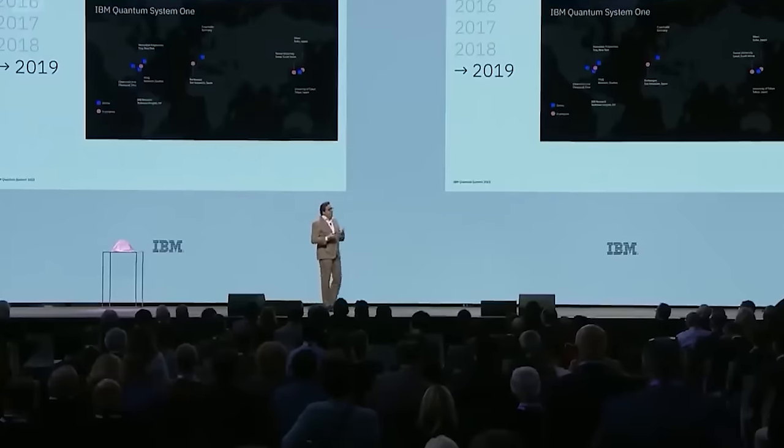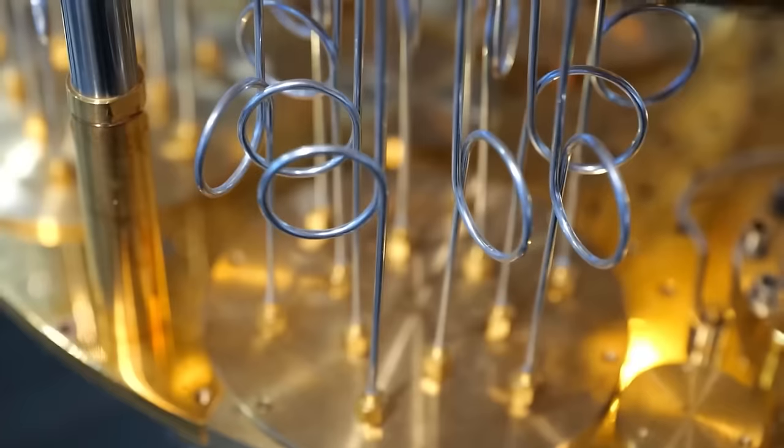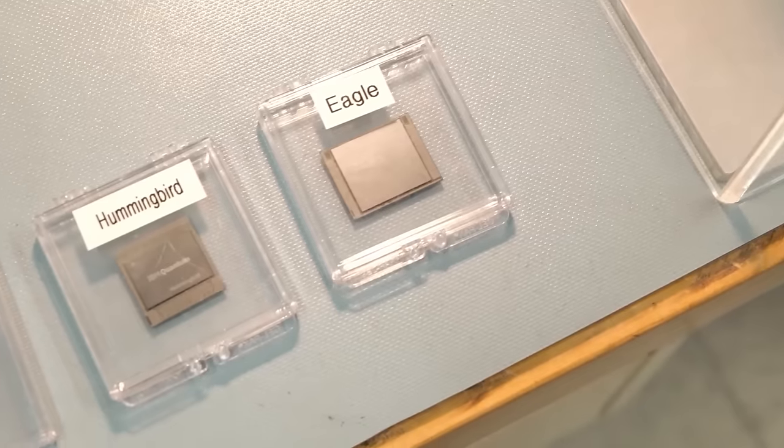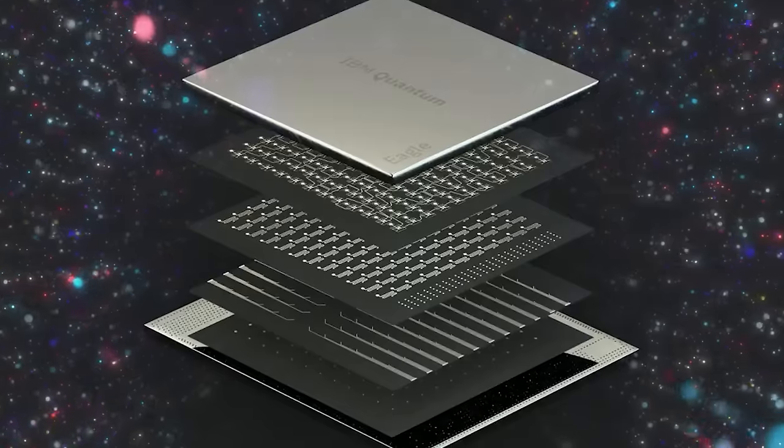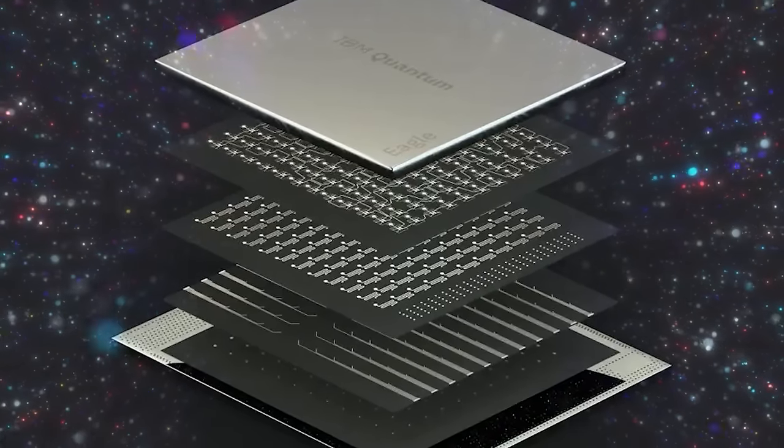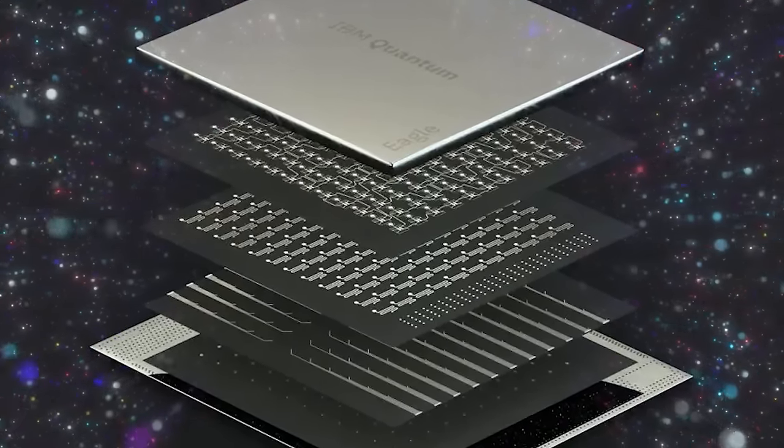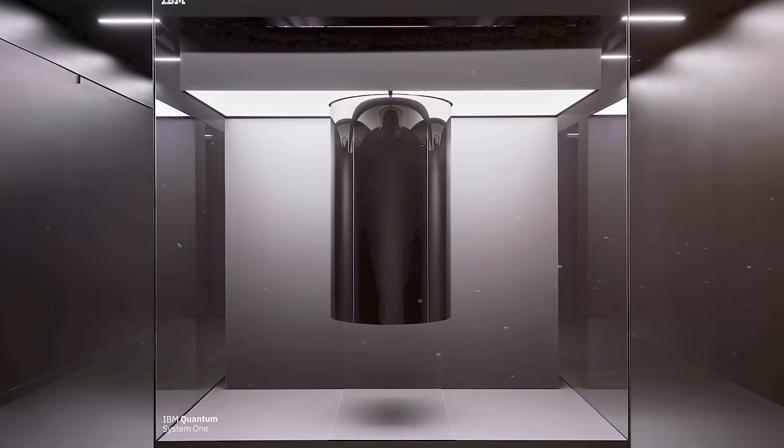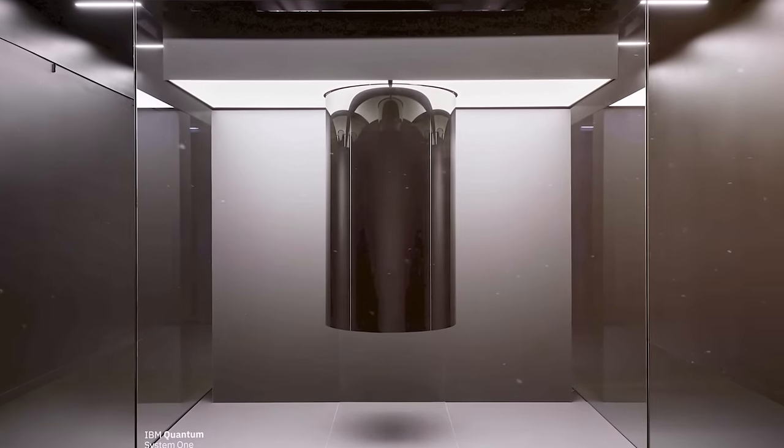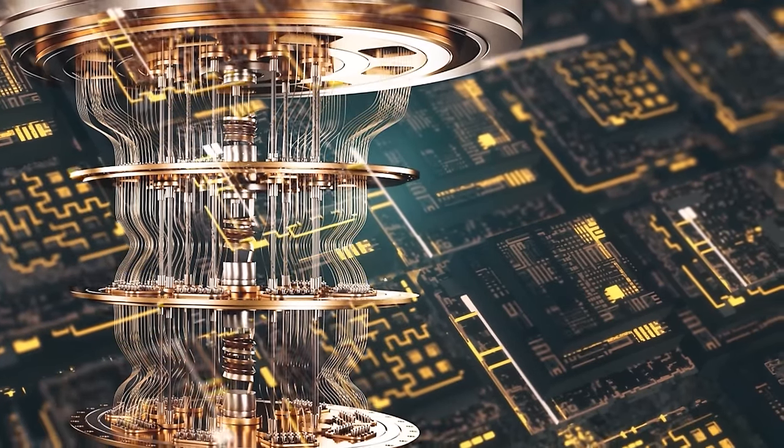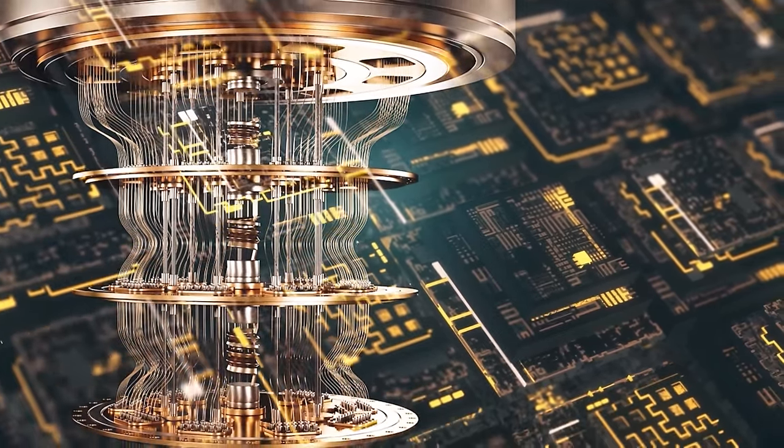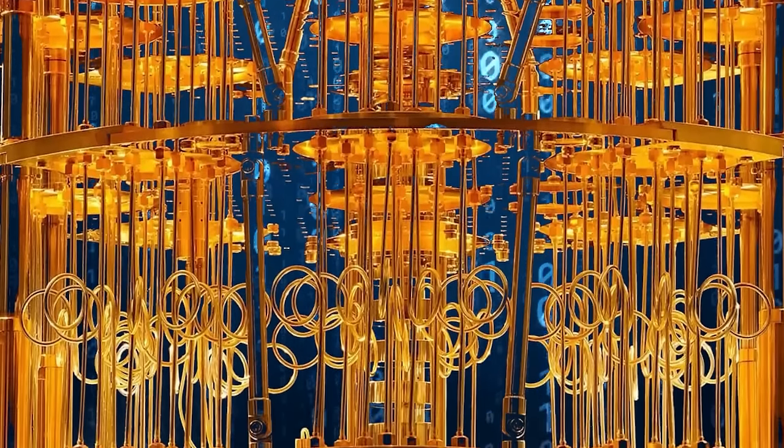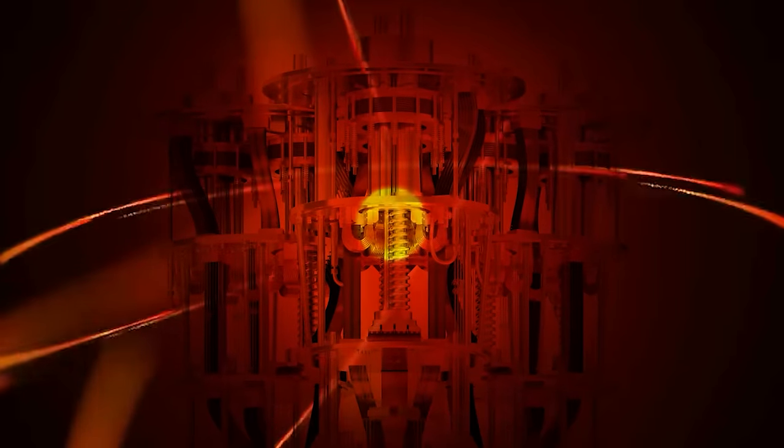But IBM wasn't just focused on theory. They knew they needed to build the actual machines to make this a reality. One of their big breakthroughs was developing these things called superconducting qubits. These are the building blocks of quantum computers, and they're like tiny quantum switches that can be flipped on and off. Keeping these qubits stable and working together is super challenging, but IBM has made huge strides in this area. They've also been busy building bigger and better quantum processors. It all started with just a few qubits, but now they're up to machines with over 50 qubits. Each new generation is not only bigger, but also better at handling the delicate quantum calculations.